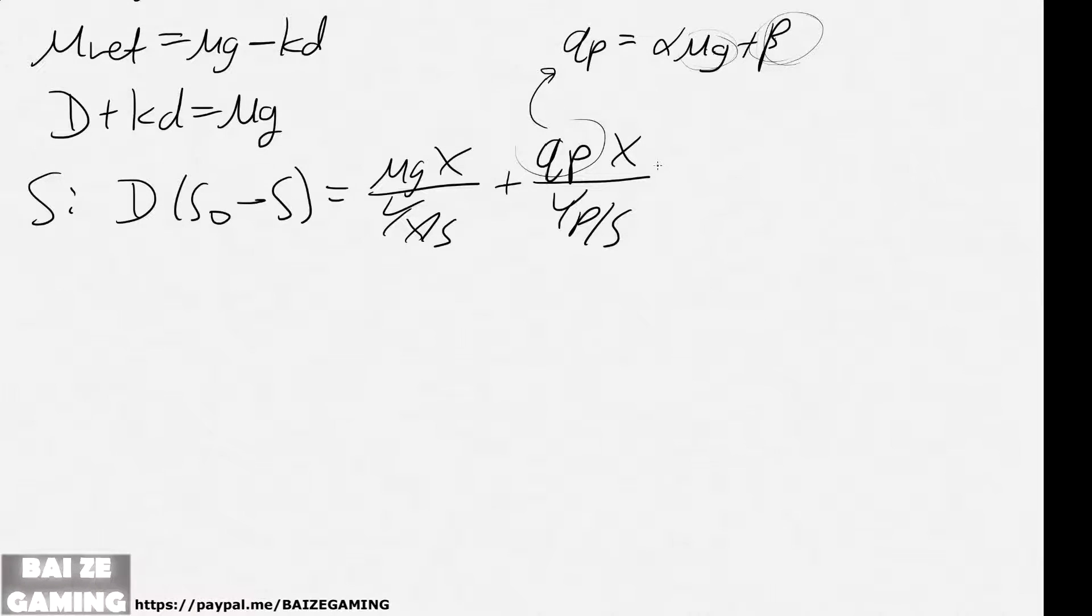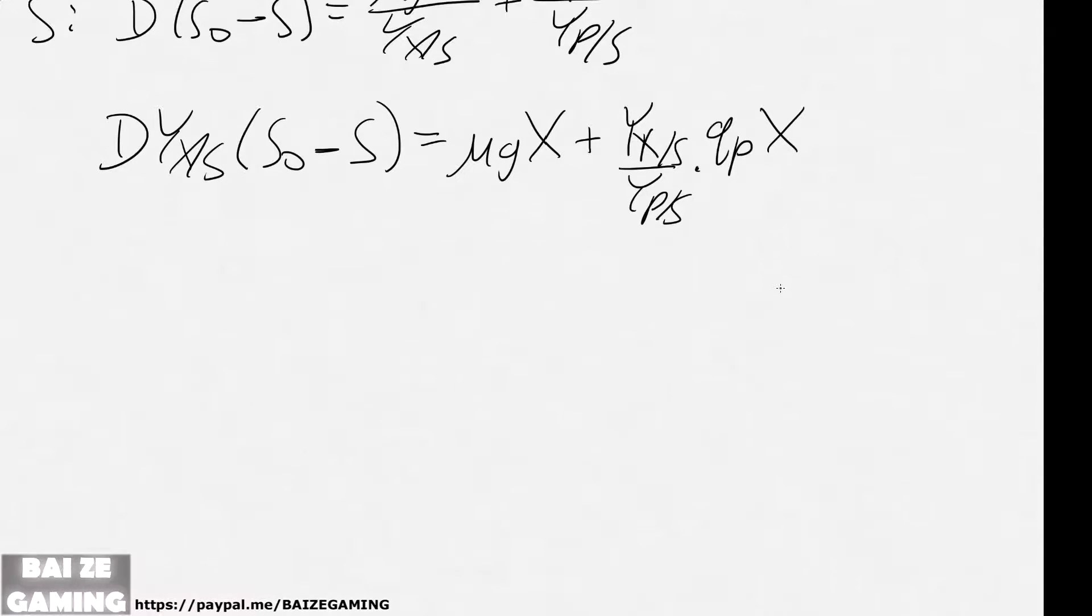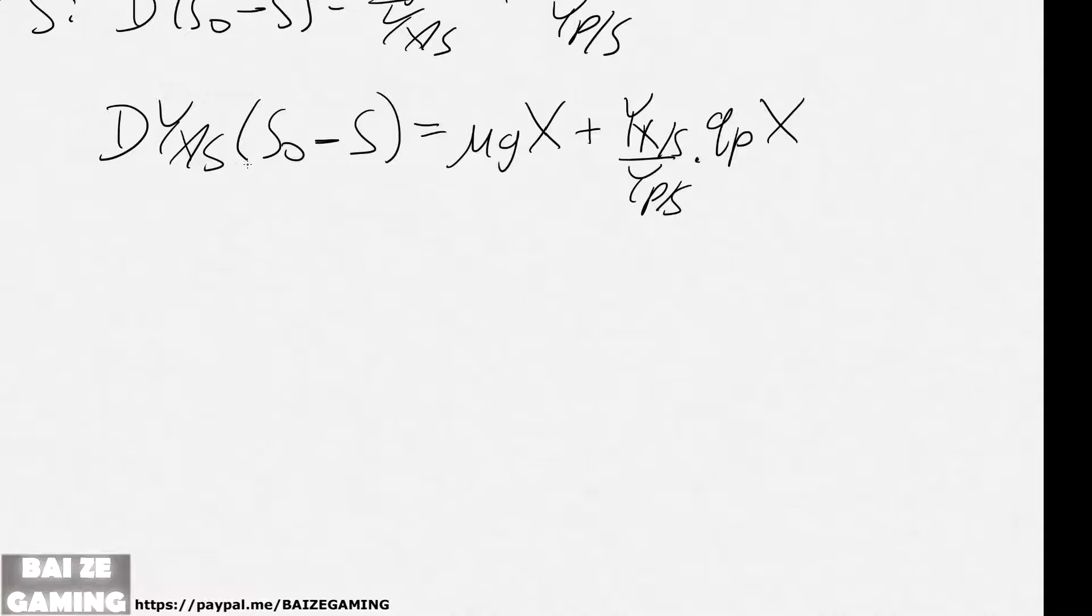But we can sub that in afterwards; we don't have to sub in right away, and we can simplify the expression. Multiply all sides by the yield of S into X. And we can just factor out the X. I mean, qP itself is also a function of X, so it's going to be implicit. When we're dealing with these parallel reactions, I don't think we'll be able to get explicit equations so easily, so we'll have to just settle for this for now.